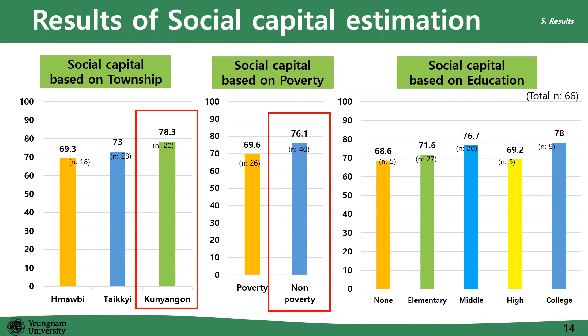The next figure explains social capital estimated based on poverty status. Households that were in non-poverty showed a higher level of social capital. The following figure explains social capital based on education level, and this result implies that social capital was fairly distributed based on education.